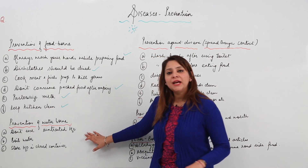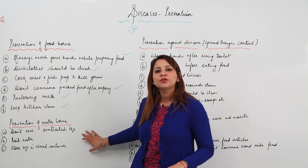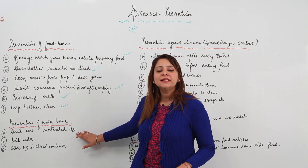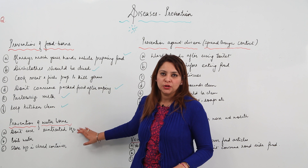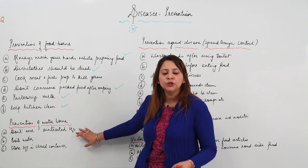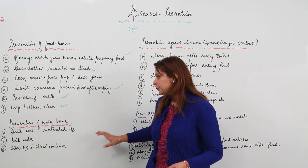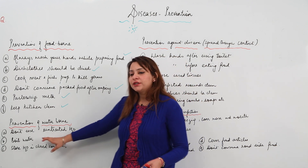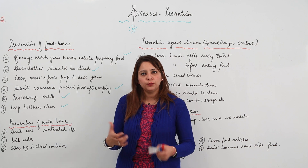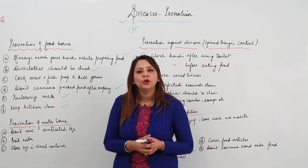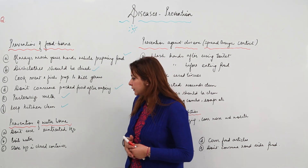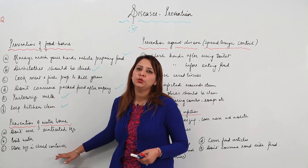Waterborne diseases occur due to the use of contaminated water. First, do not use untreated water — make use of water purifiers and aqua guards. Boiling water is the cheapest method to treat water; when you boil water, the microorganisms get killed.